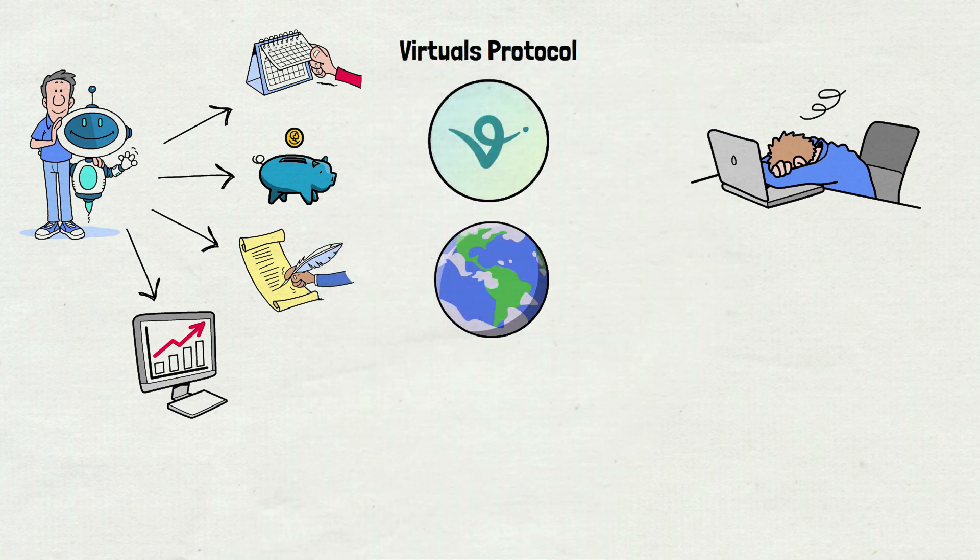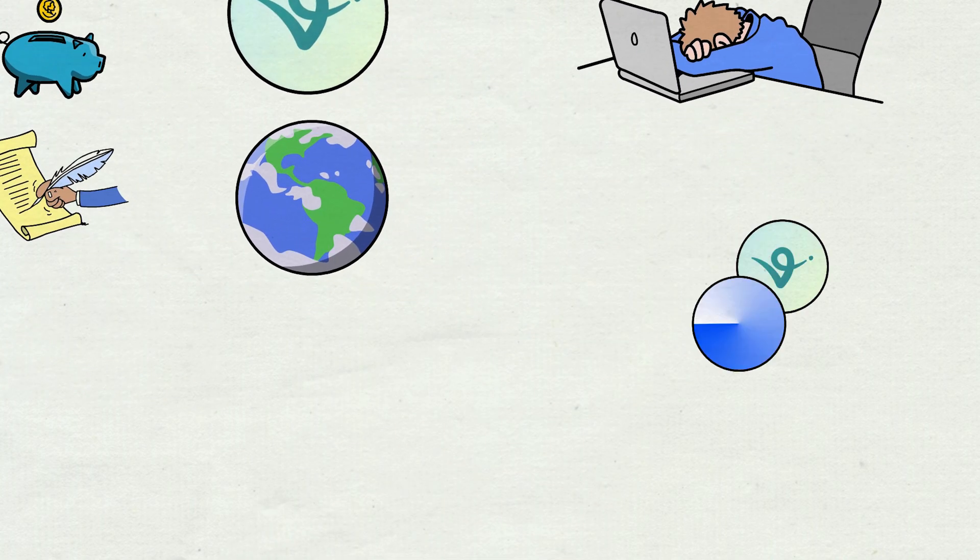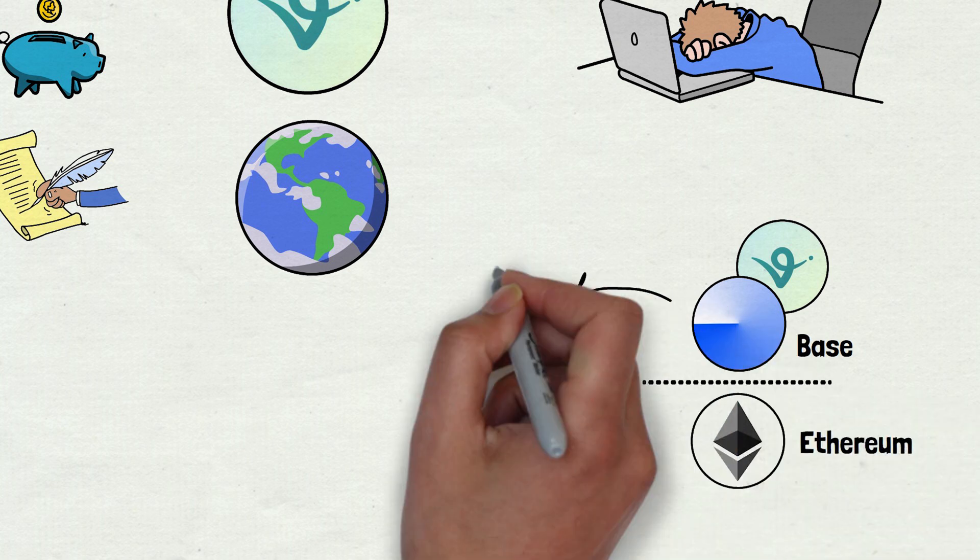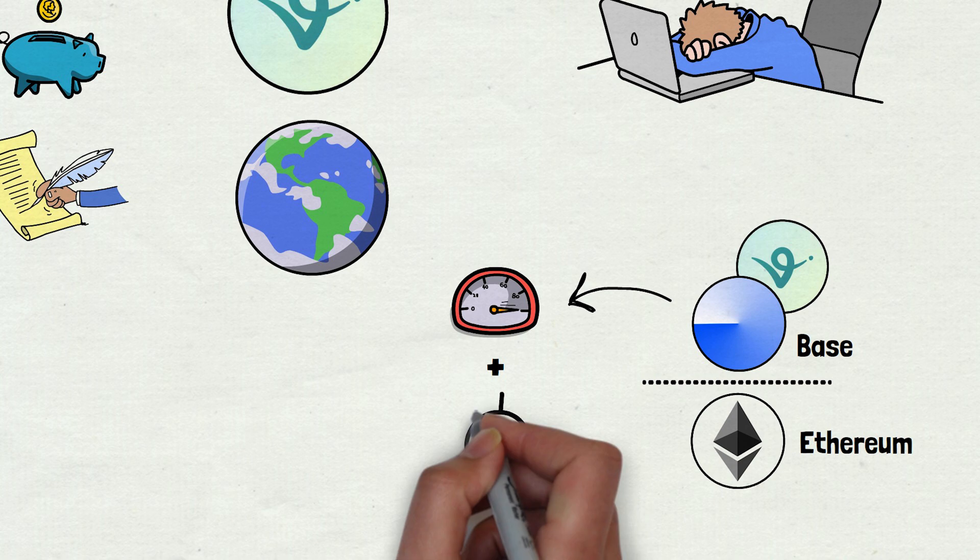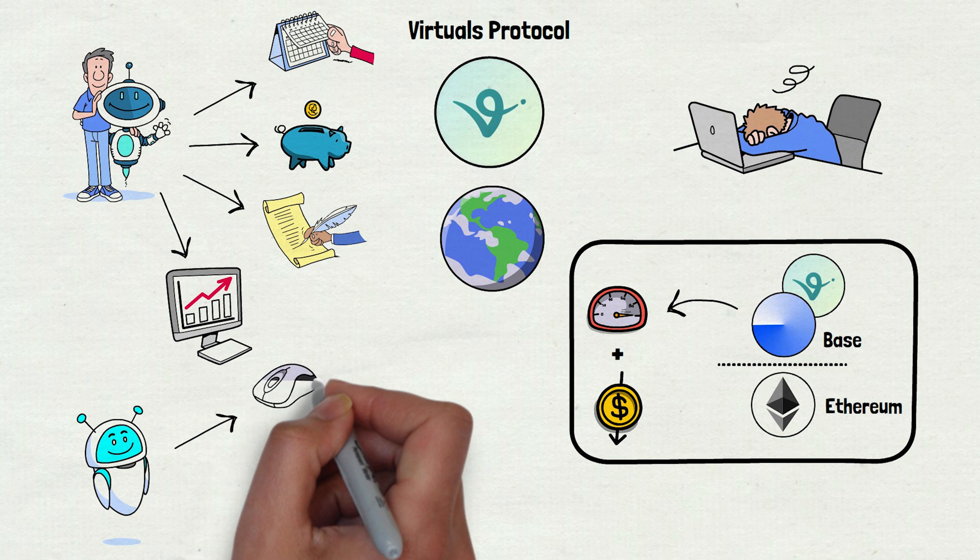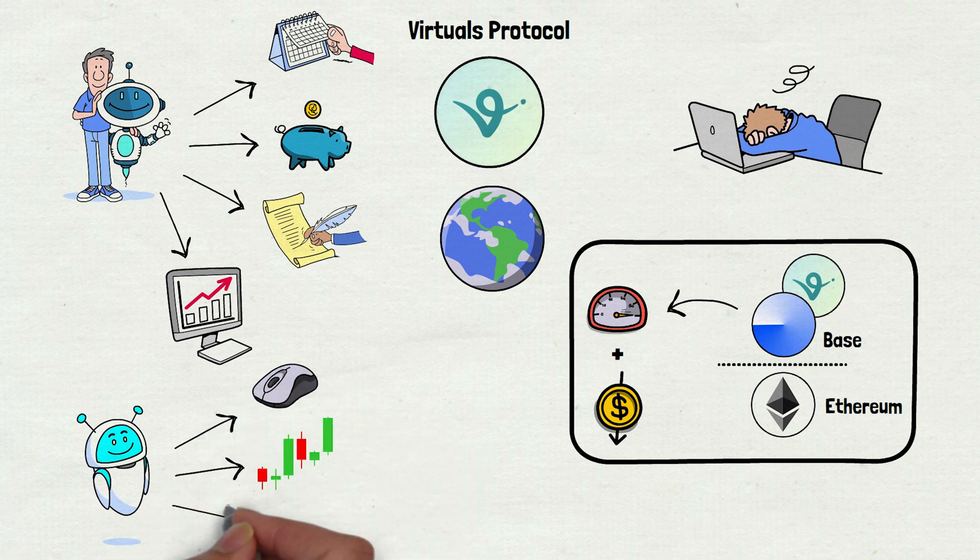VIRTUALS PROTOCOL is a decentralized platform built on the Base blockchain, a layer 2 solution on Ethereum that's faster and cheaper. At its core, it's creating an economy where AI agents can work, trade, and earn money just like you and me.